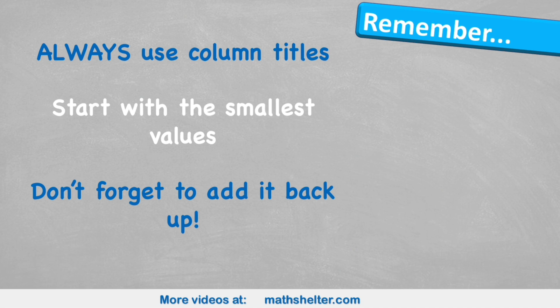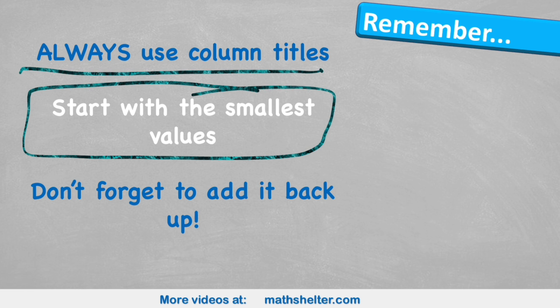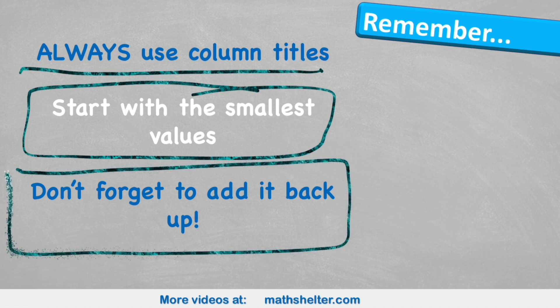Okay, let's look at what to remember. Always use column titles. This will help you avoid mistakes, especially when you get to the adding up part at the end. Start by multiplying the smallest values first and then slowly work your way up the bigger number on the top. And finally, don't forget to add up your question at the end. Some people do the partitioning part and then forget to add it up.